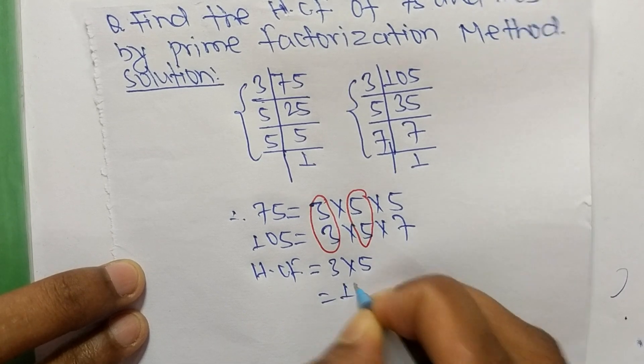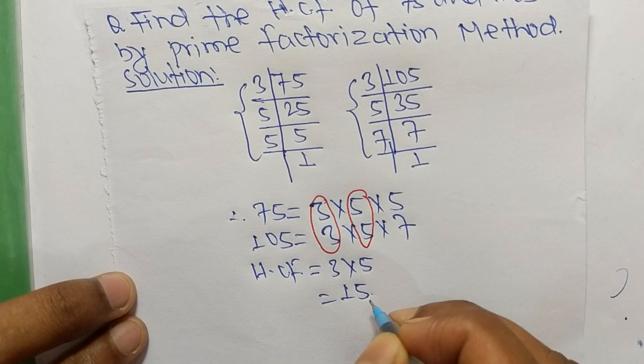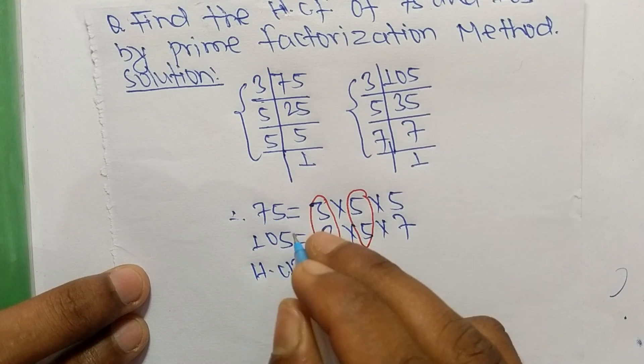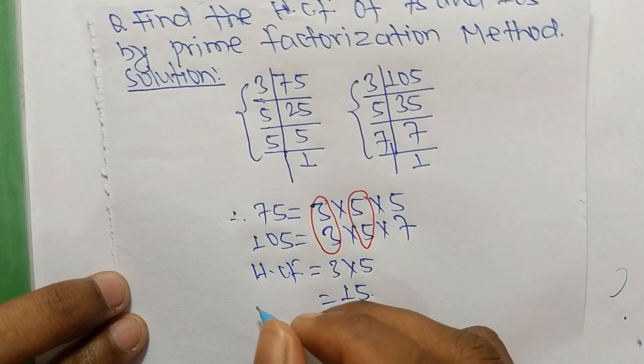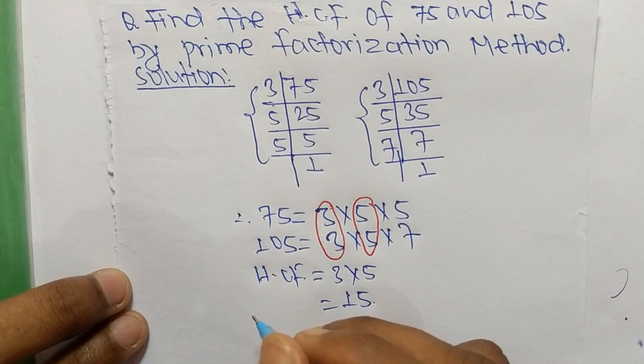3 times 5 equals 15. So 15 is the HCF of 75 and 105. That's all for today, thanks for watching.